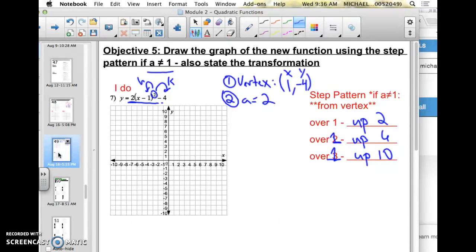That's all you need to keep in mind for this process. So if I'm going to draw this function y equals 2 times x minus 1 squared minus 4, I start with the vertex, so I go over 1, down to 4, and then I use the step pattern.